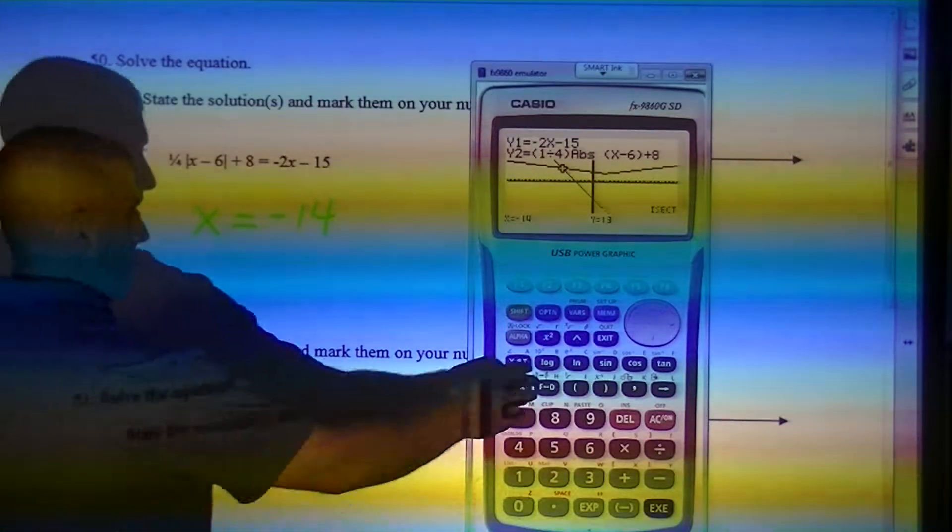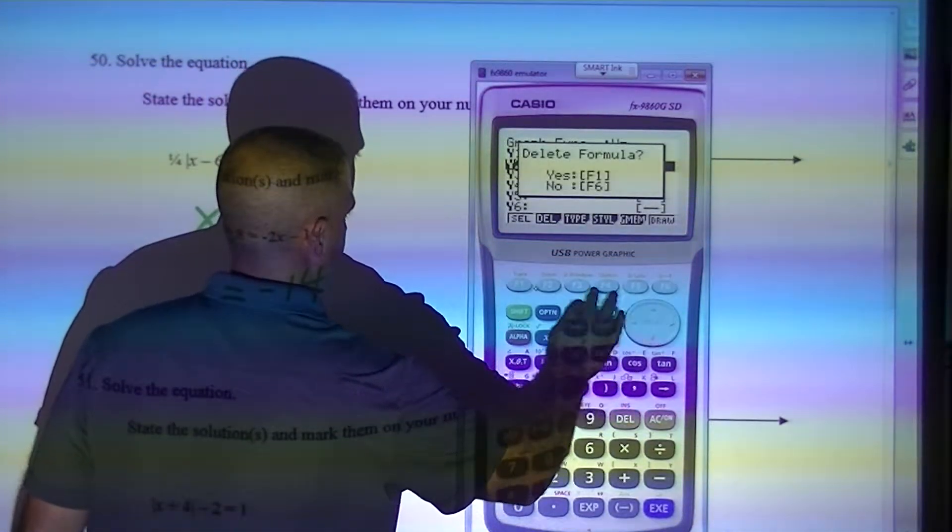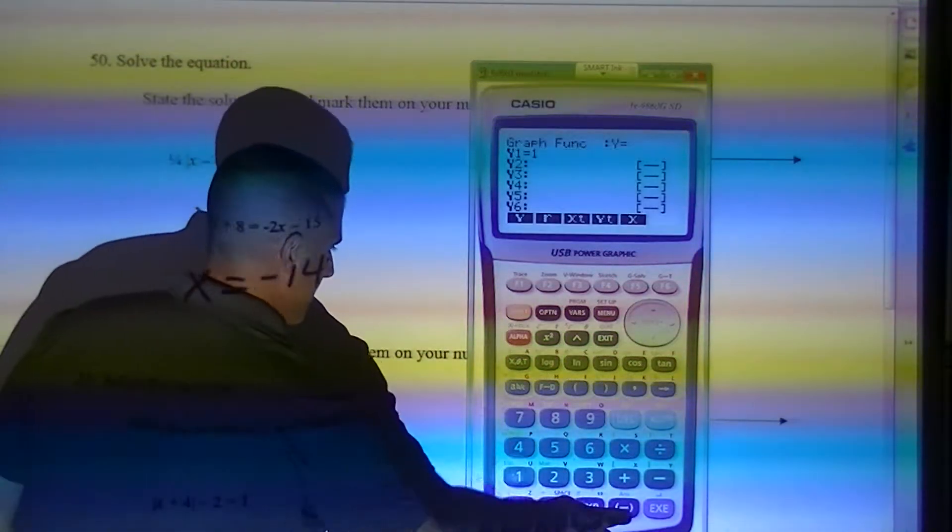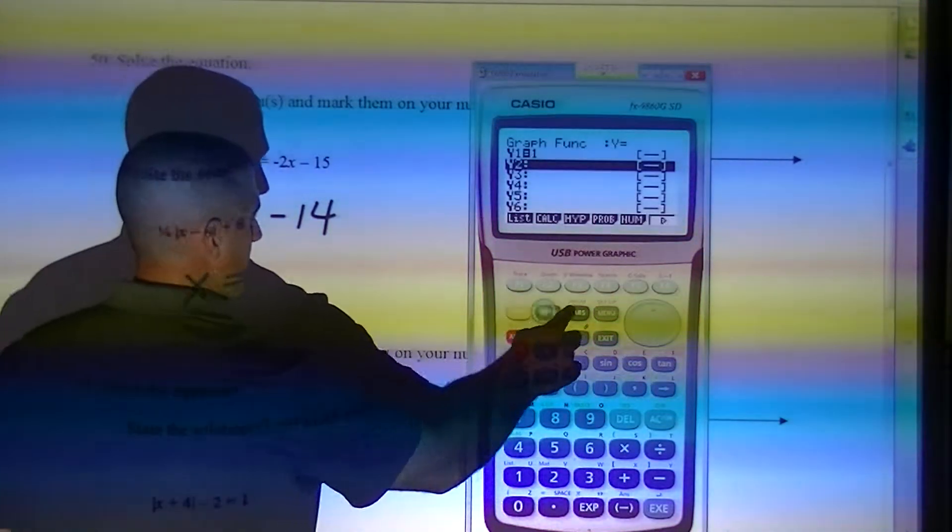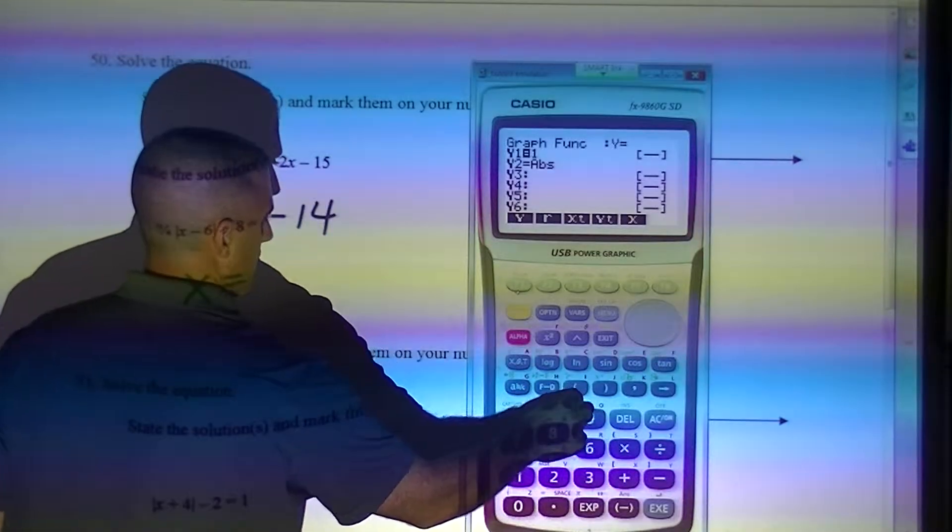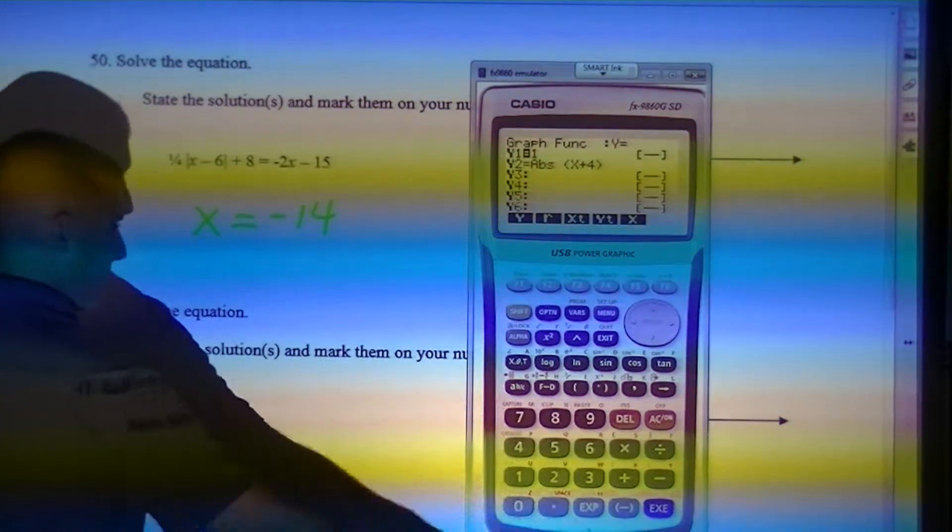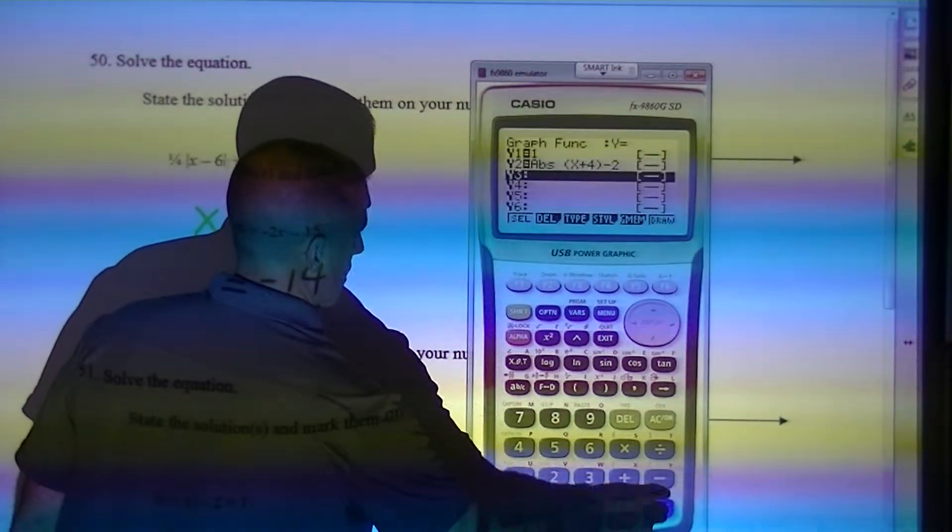Down to this. I'm going to go back and delete what I have. Left, delete, delete. I'm going to graph 1 on that side. Option, num, abs. x plus 4. Minus 2. Draw.